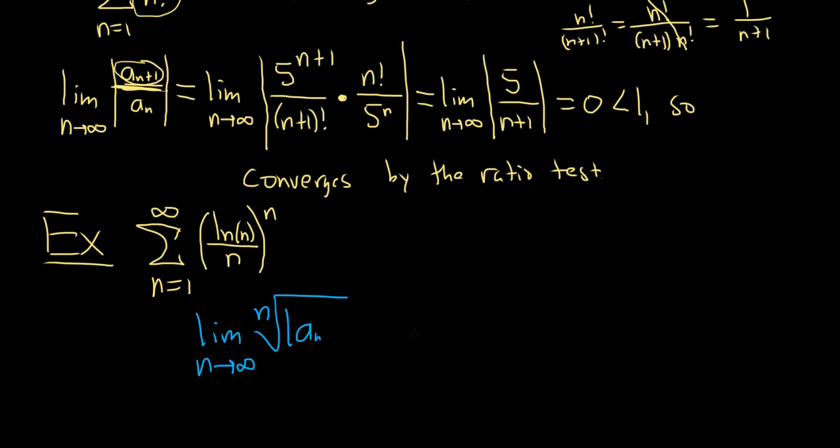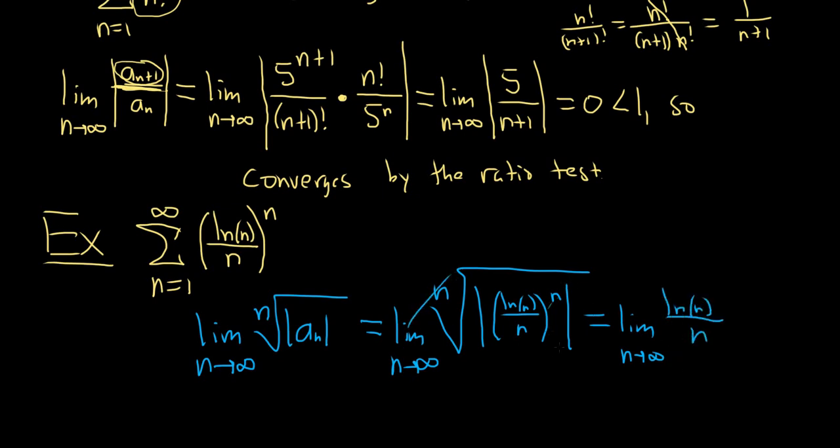So the root test says we take the limit as n approaches infinity of the nth root of the absolute value of a sub n. So this is equal to the limit as n approaches infinity of the nth root of the absolute value of ln n over n to the n. You'll notice that the absolute value does not matter at all. The natural log here is going to be positive for n bigger than or equal to 1. So we can drop the absolute value. And we can also drop the n and the root because the nth root of something to the nth power, it cancels. So this is just going to be ln n over n.